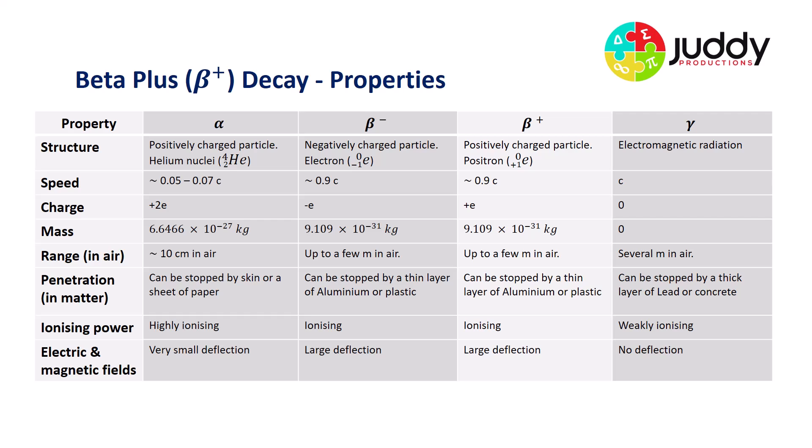Finally, let's have a look at the beta plus decay properties. So we can see here on our table that beta plus is a positively charged particle and it is physically a positron. It has the speed of approximately 90% the speed of light, so it travels quite fast. It has a charge equal in magnitude and electron, but opposite in polarity, so it's a positive charge. The mass of a beta plus particle is exactly the same as that of a beta minus particle and it's 9.109 by 10 to the negative 31 kilograms. The range is up to a few meters in air. Its penetration in matter can be stopped by a thin layer of aluminium or plastic. Ionizing power, it is an ionizing form of radiation and in terms of its interaction with electric and magnetic fields, it does in fact interact and it causes deflection because it's a charged particle.